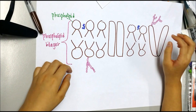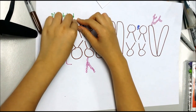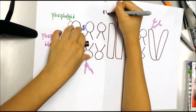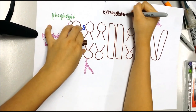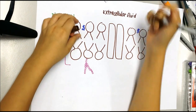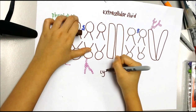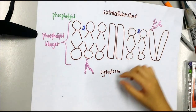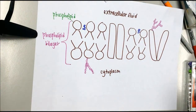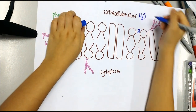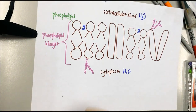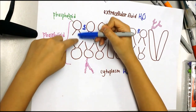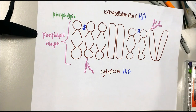The phospholipid molecules arrange to form a bilayer in the plasma membrane. In the bilayer, the hydrophilic heads face outwards toward the extracellular fluid and the cytoplasm, because both contain H₂O. The hydrophobic tails face inwards toward each other, forming a hydrophobic region.